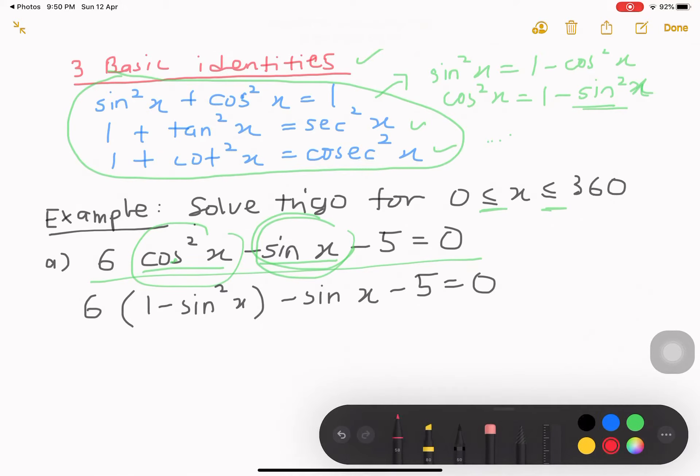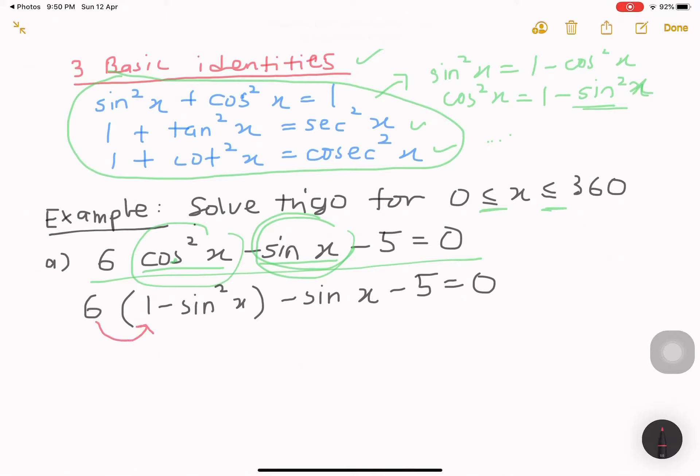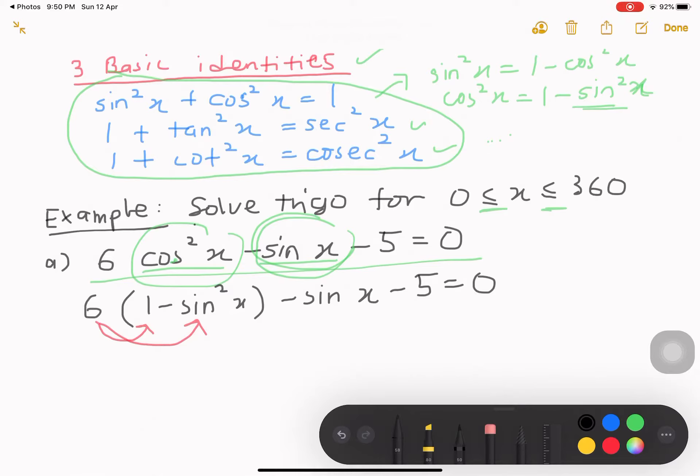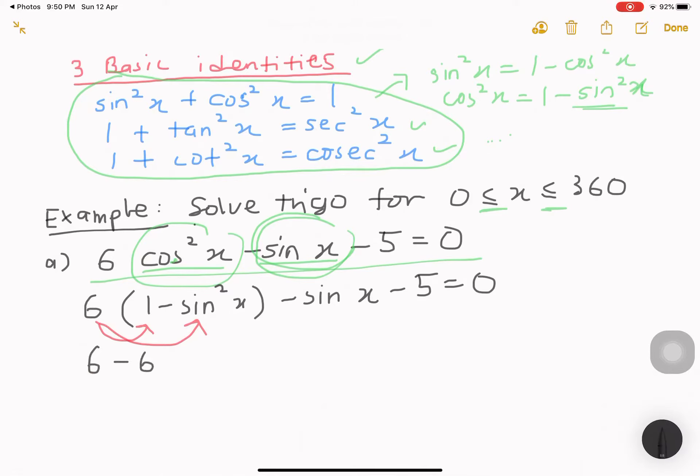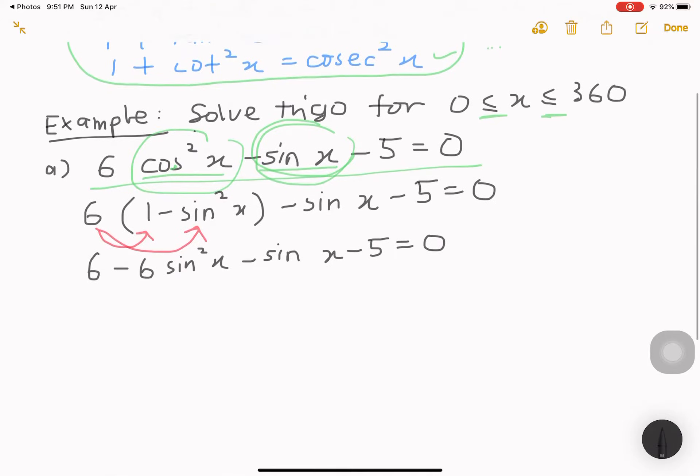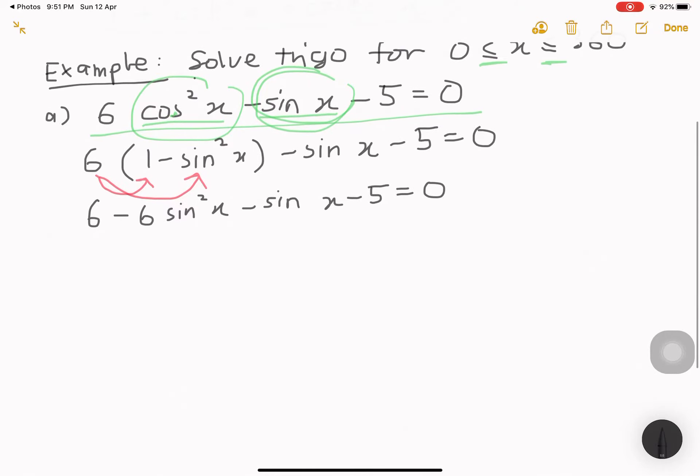I replace cos square x to be 1 minus sin square x minus sin x minus 5 equals to 0. What I do next is that I have to expand this because we have 6. Our coefficient in front of cos square x is 6, then I need to expand 6 inside the bracket. I expand this, then I get 6 minus 6 sin square x minus sin x minus 5 equals to 0.